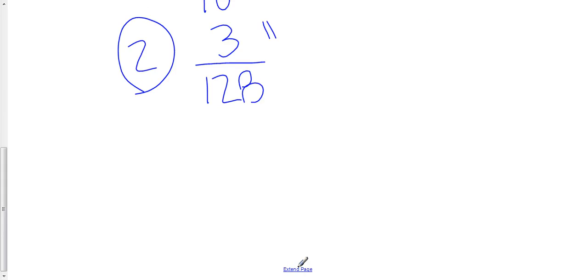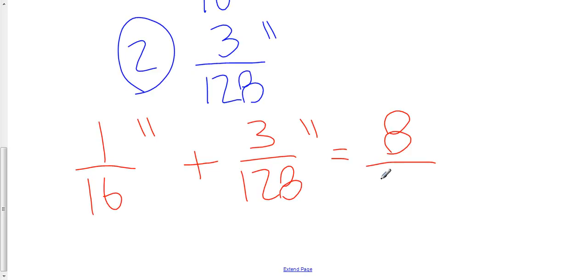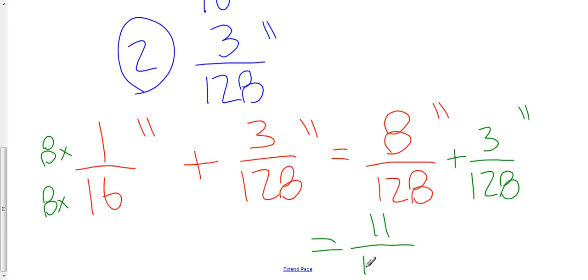So I get my final reading by adding those two amounts. I have 1/16th of an inch and I'm going to add to that 3/128ths of an inch. In order to add these fractions, I need a common denominator. Common denominator here is going to be 128. So I have 8 over 128, and I multiplied the top and bottom here by 8 to get that. Plus 3/128ths of an inch. So my total 8 plus 3 is 11, so that's 11/128ths of an inch.